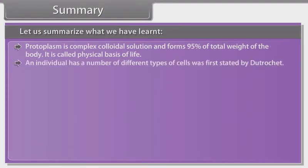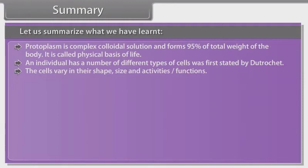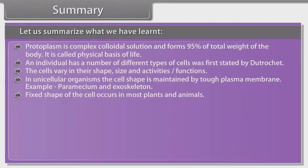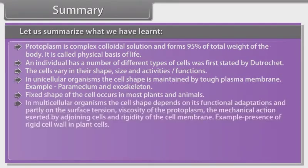That an individual has a number of different types of cells was first stated by Dutrocher. The cells vary in their shape, size and activities or functions. In unicellular organisms, the cell shape is maintained by a tough plasma membrane — for example, paramecium and exoskeleton. Fixed shape of the cell occurs in most plants and animals. In multicellular organisms, cell shape depends on functional adaptations and partly on surface tension and viscosity of the protoplasm.